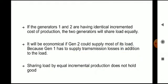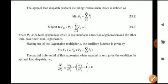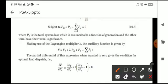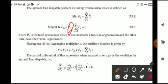The optimal load dispatch problem including transmission losses is defined as: minimize Ft equal to sigma (n=1 to n) Fn, where Ft is the fuel input, subjected to PD plus PL minus sigma Pn equal to 0. Here PD is the load demand, PL is the total system loss, and Pn is the corresponding generation of each generator.